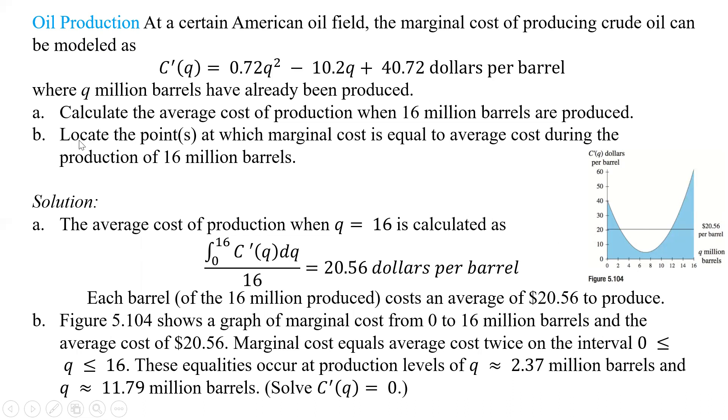Now, as part B said, locate the points at which the marginal cost is equal to the average cost during the production of 16 million barrels. That means we're going to have to find that intersection point. If we find those two points, we'll know where that's going to be happening, and we can use our calculator once again. We find it's about 2.37 million barrels over here, and over here, it's going to be about 11.79 million barrels. We can use our graph and do the intersect point, which is number five on the second trace, or we could use a numeric solver and plug it in that way, and we'll come up with two answers as well.